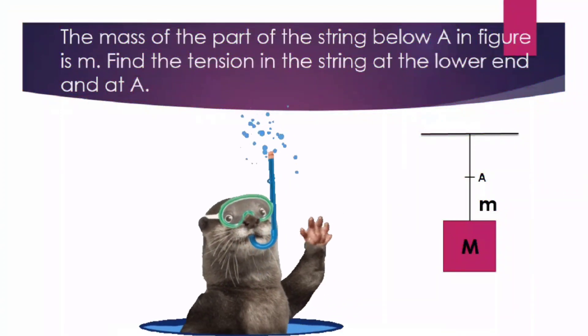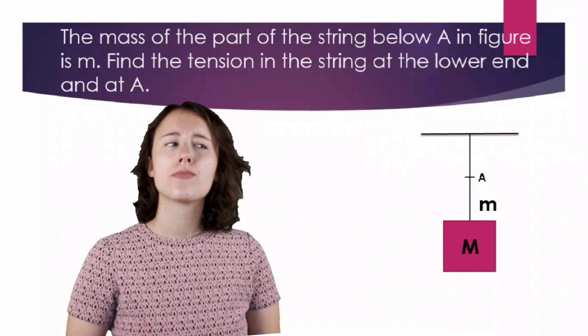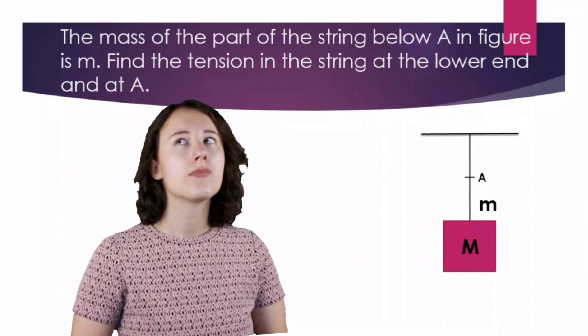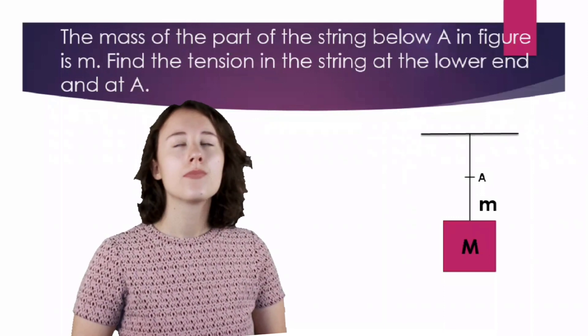Hello everyone, welcome to Exemplar Physics. We have a question here. The question is: the mass of the part of the string below A in the figure is m. Find the tension in the string at the lower end and at A.